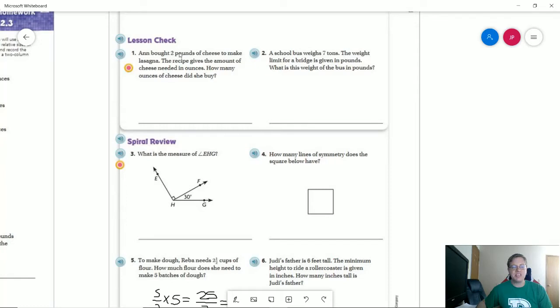So number 1 on the back, 2 pounds of cheese. This is a similar thing - it gives the recipe amount in ounces. So how many ounces? We can do 2 times 16, that would give us 32 ounces. Then a school bus weighs 7 tons. The weight limit for a bridge is given in pounds. So the weight of the bus in pounds would be 7 times 2,000, and that would give us 14,000.